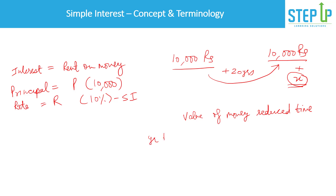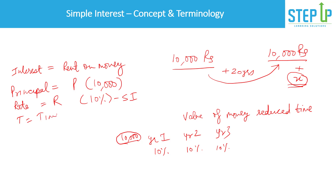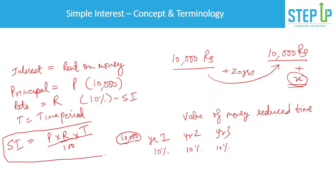For example, after year one if I return the ten thousand rupees, you would charge ten percent interest. For year two you would charge an additional ten percent on the principal. Year three also ten percent on the principal. So if principal is P, rate is R, and T is the time period, the formula for simple interest is P × R × T divided by 100.